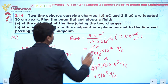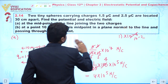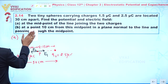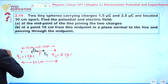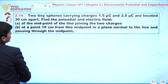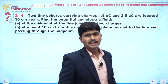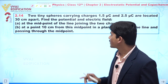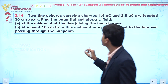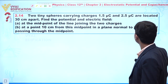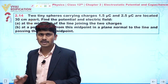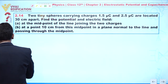Now we are going to discuss Part B. In Part B, we have to find the electric potential and electric field at a point 10 centimeters from the midpoint in a plane normal to the line and passing through the midpoint. Let us understand the given situation.